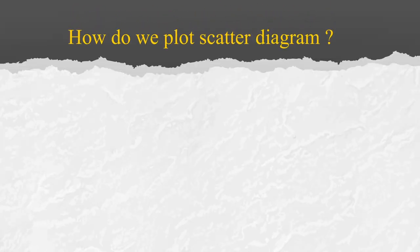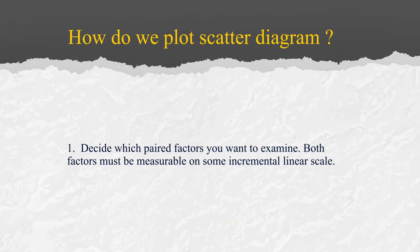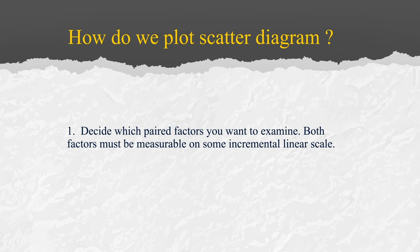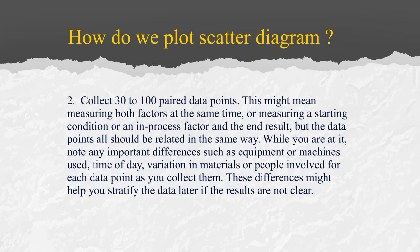How do we plot a scatter diagram? The first step is to decide which pair of factors you want to examine. Both factors must be measurable on some incremental linear scale. We have seen that linear diagrams can show positive or negative relationships.